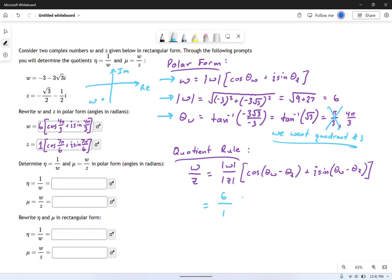The modulus of Z is one. The angle of W is four pi over three. The angle of Z is seven pi over six. And we're simply going to do that same exact thing for the I sine portion.